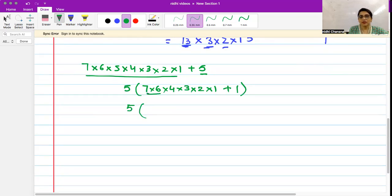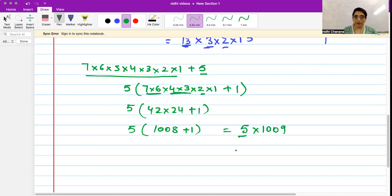When you multiply 42 and 24, you get 1008. So this becomes 1008 + 1 = 1009, which means we have 5 × 1009.